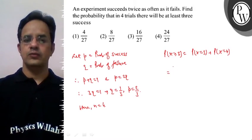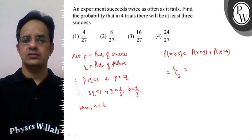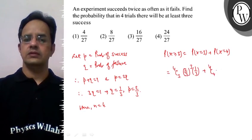Now for x equal to 3, we have 4C3. The probability of success is 2/3, so we have 2/3 raised to power 3 and 1/3. Then it is 4C4 and we have 2/3 raised to power 4.